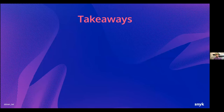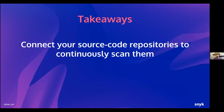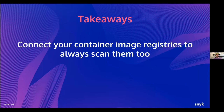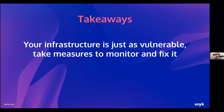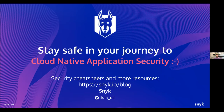I'd like to leave you with several takeaways: connect your source code repositories to continuously scan them; connect your container image registries to continuously scan them as well and avoid dependency drift — monitor both what you have deployed and what you have in your source code repositories; prefer minimal, secure base images and act on base image recommendation advice so if a vulnerability comes up you know where to move quickly; and don't forget your infrastructure — it is just as vulnerable, so take measures to monitor and fix it. There are security cheat sheets and resources on the Snyk IO blog.